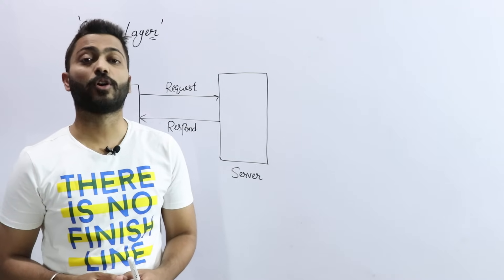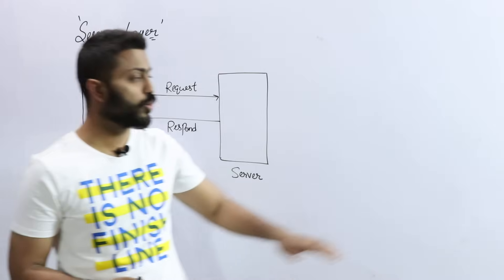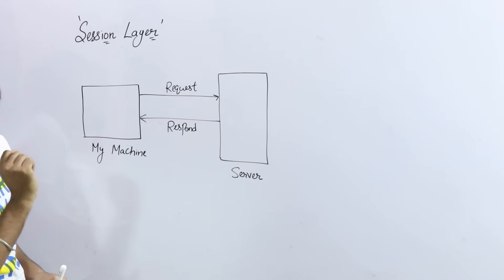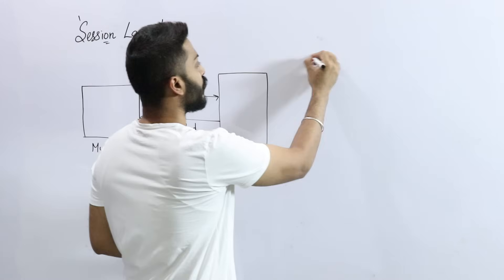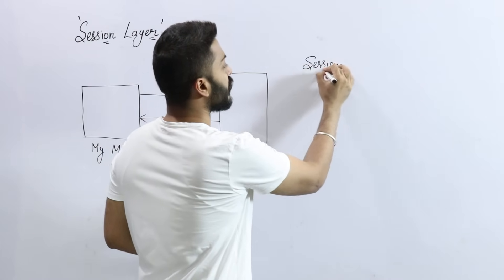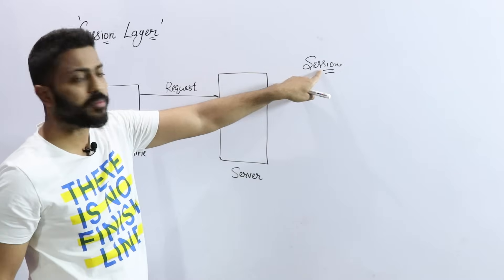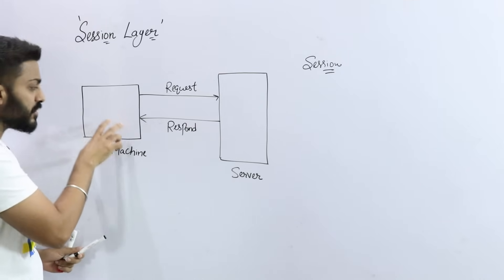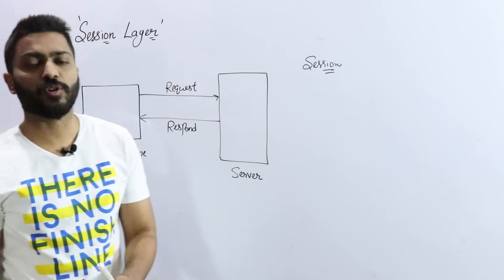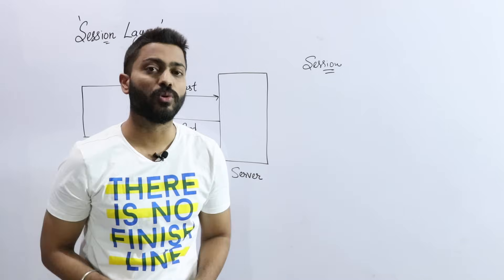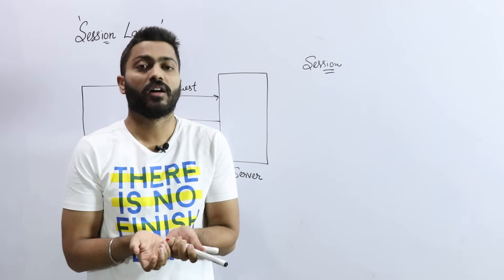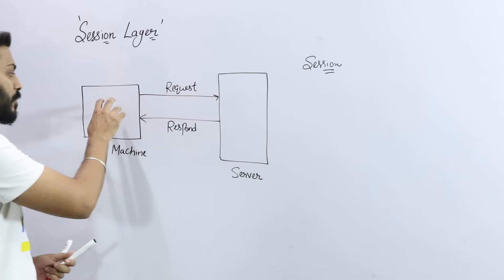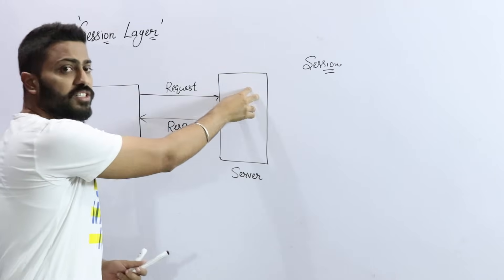Hello friends, welcome to GatesMeasures. The topic is Session Layer. Session layer is the sixth layer in the OSI model from the bottom. The responsibility of the session layer — let's say this is my machine, my laptop, and I am connecting with a server. If I am a machine, laptop, or mobile connecting to an online server like SBI, PNB, or OBC for online transactions, my machine will send a request to that server.